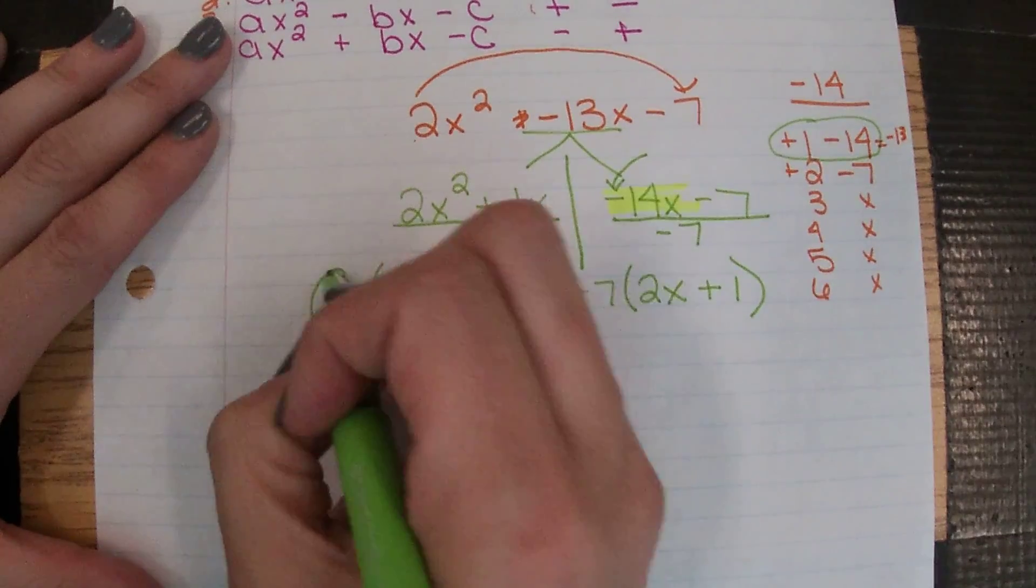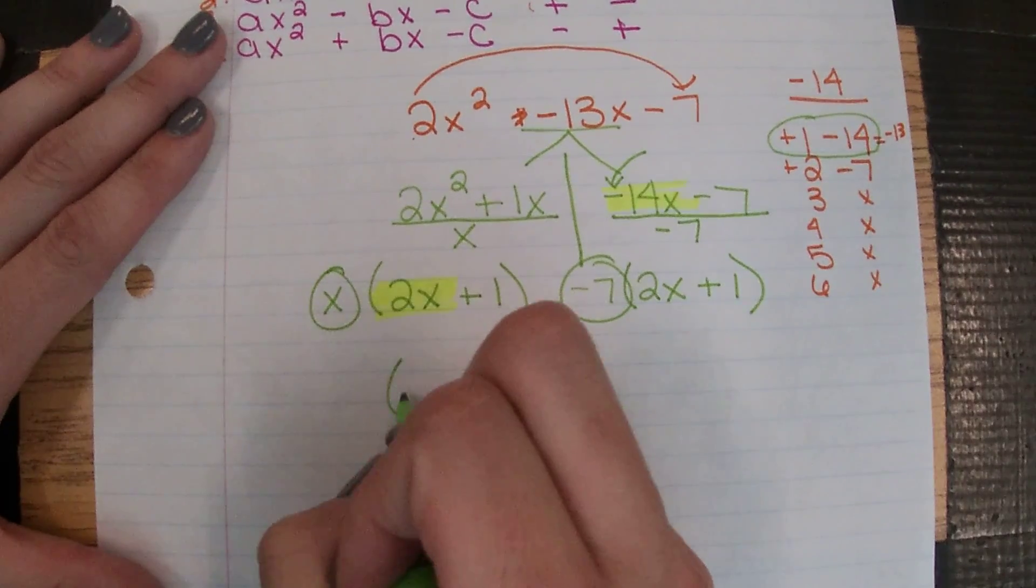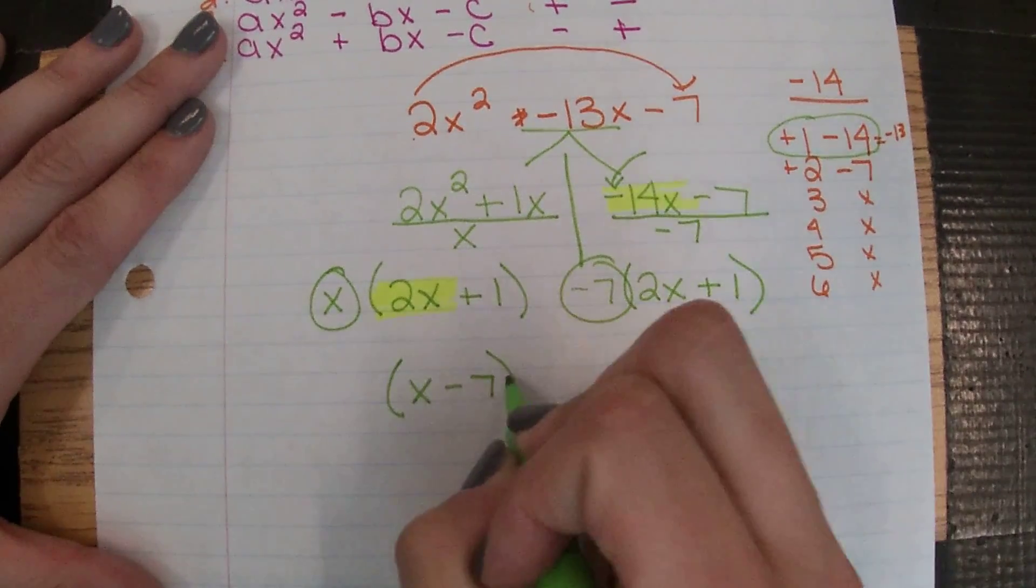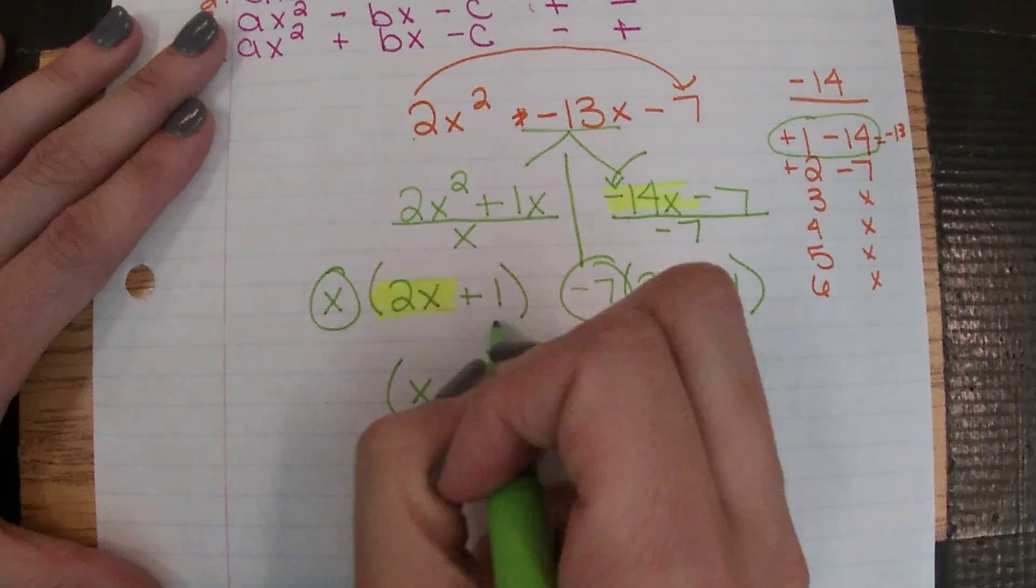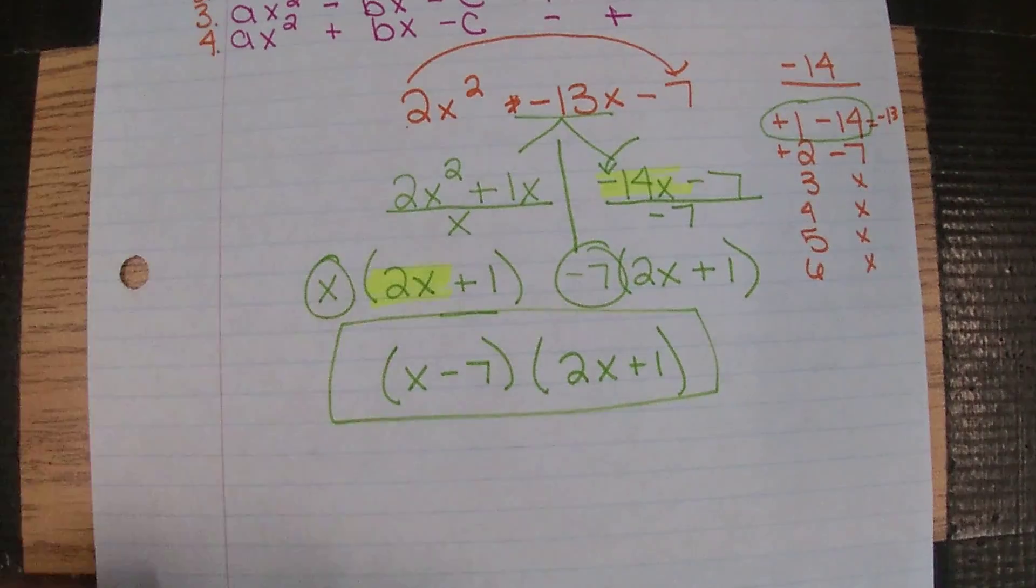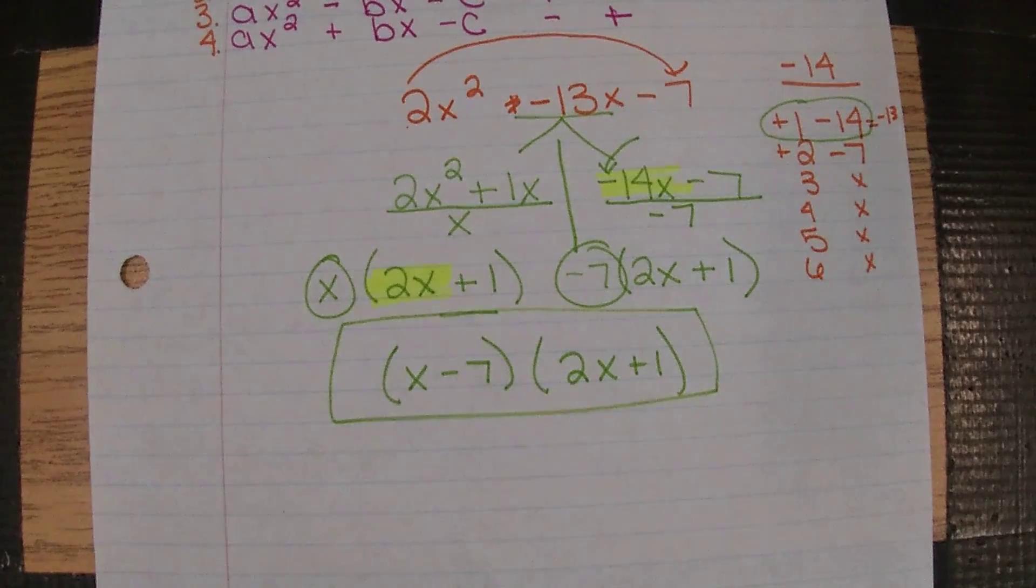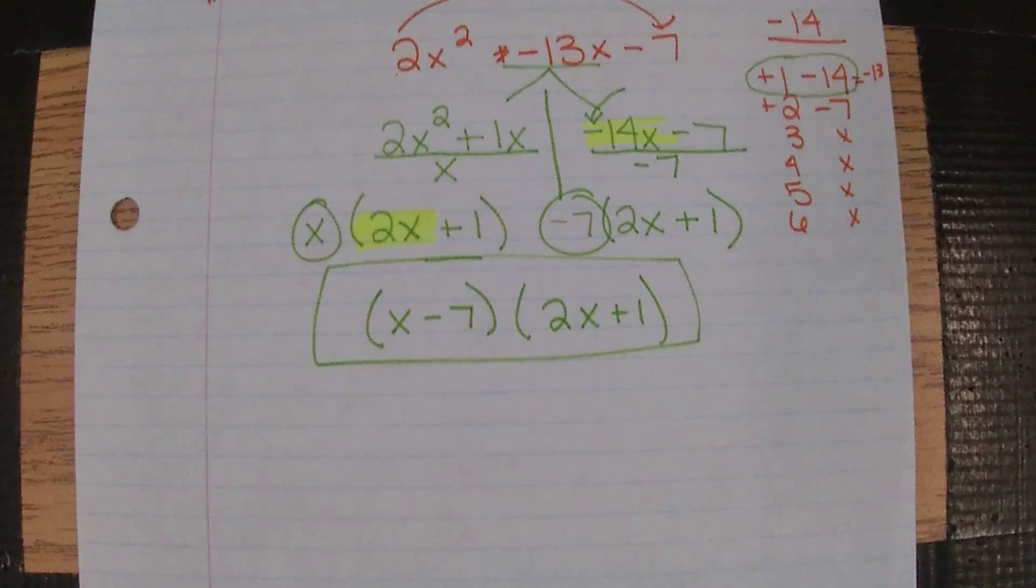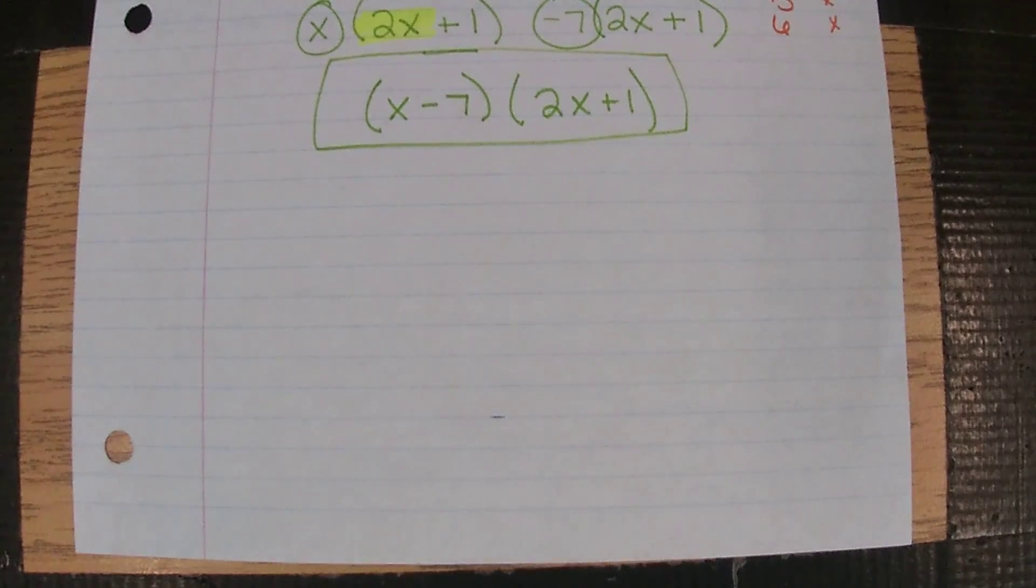And then for our final step, our numbers in front are going together and our common binomial, and there is our answer. So we're just going to look at one more here because, again, the idea is at this point we already know the process of factoring. We're just simply adding in the fact that some of them could be negative.